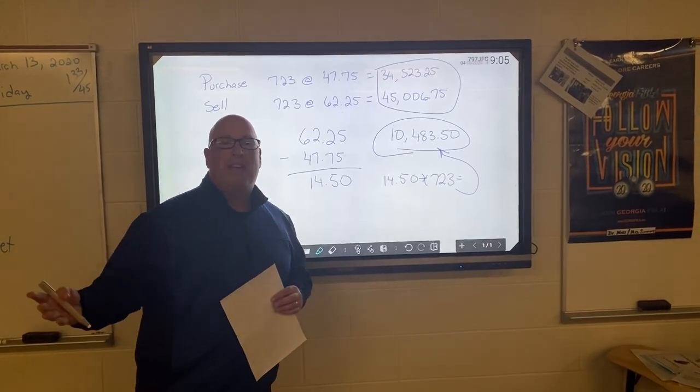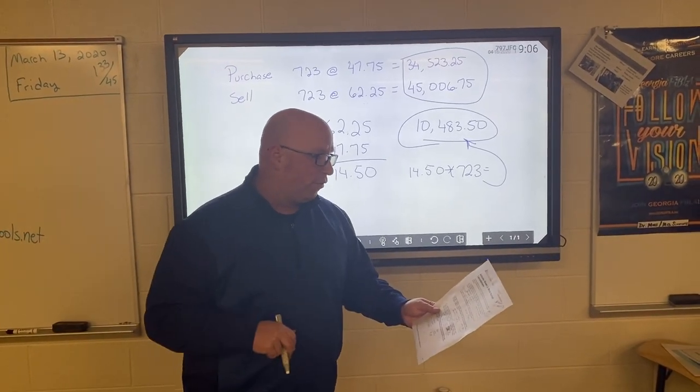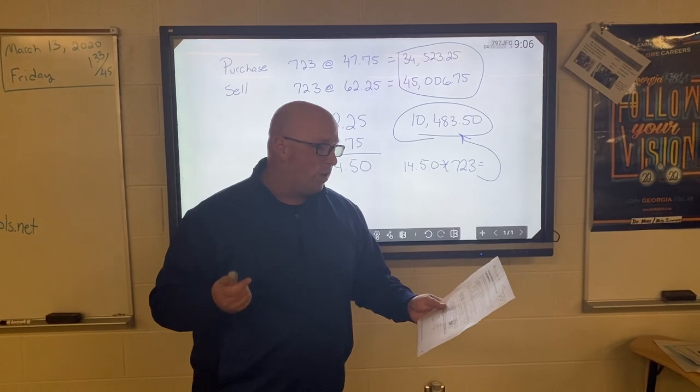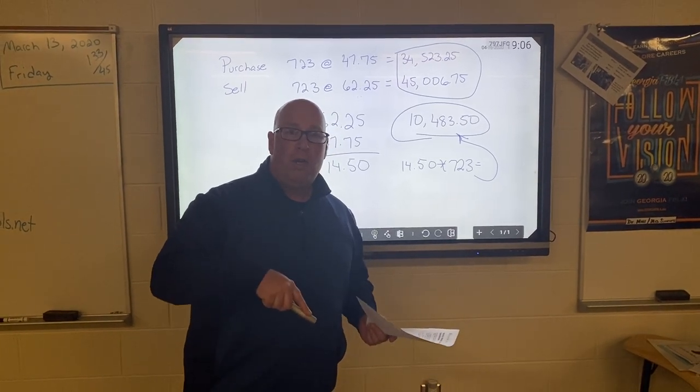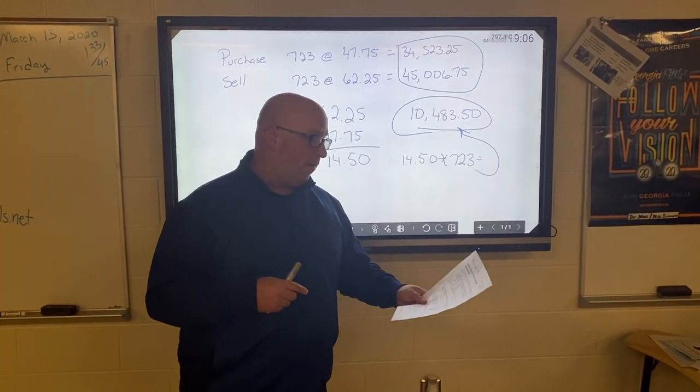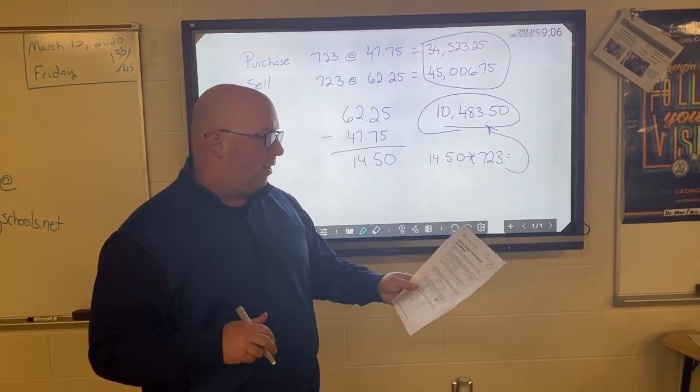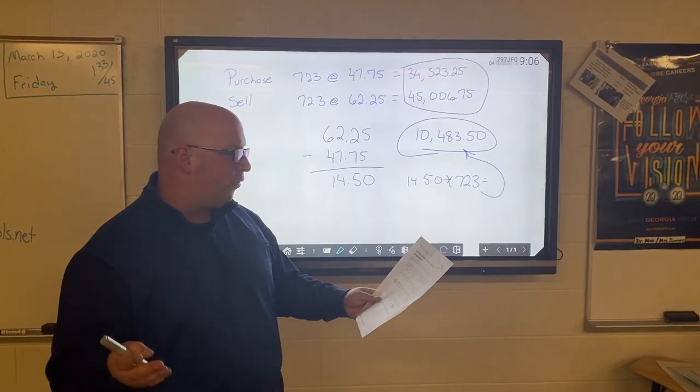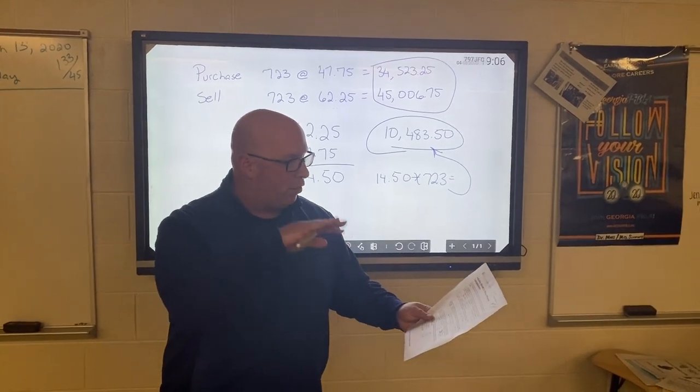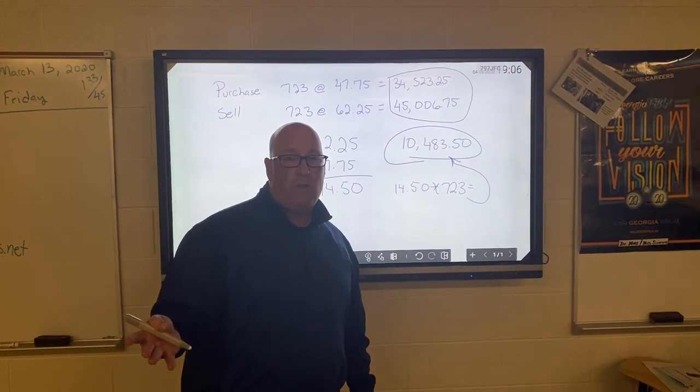The second problem deals with another issue. It says, during the year you own Nike stock, you earn a dividend of $1.25 per share. You also should have learned through previous instruction that corporations pay out dividends to a stockholder. So if you had $1.25 per share and you had 720 shares—in number two it changes it to 720 shares for some reason—you take 720 times $1.25 and that gives you $900.